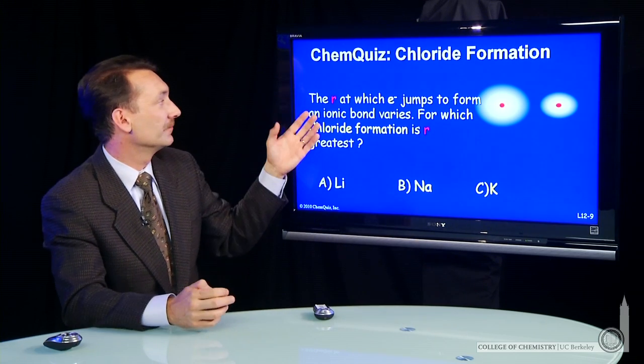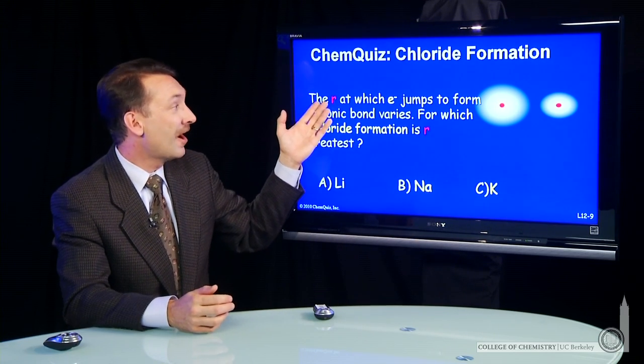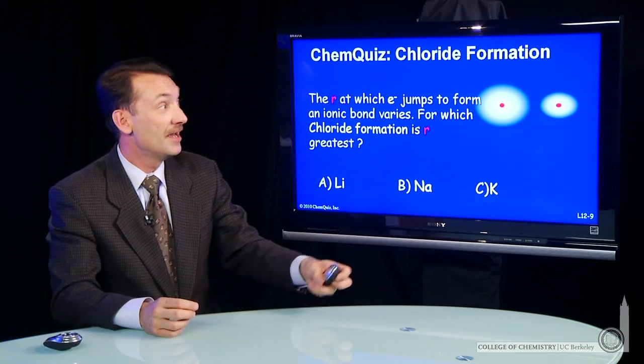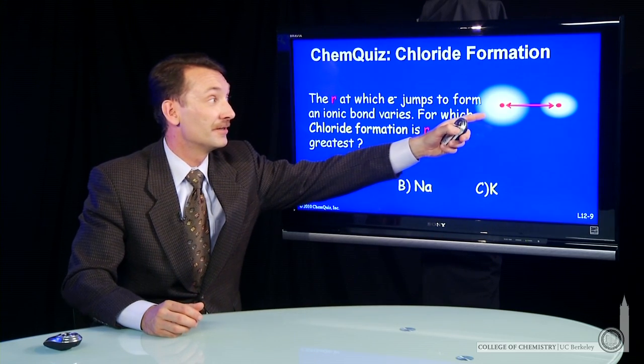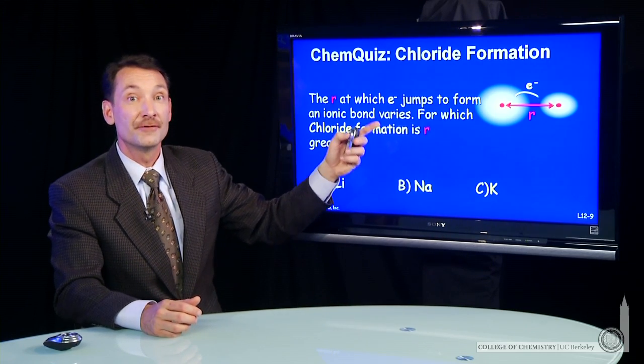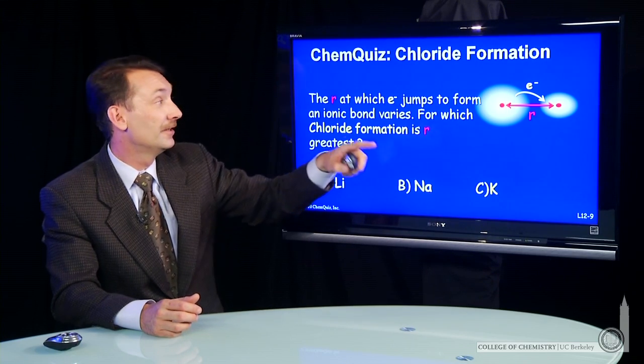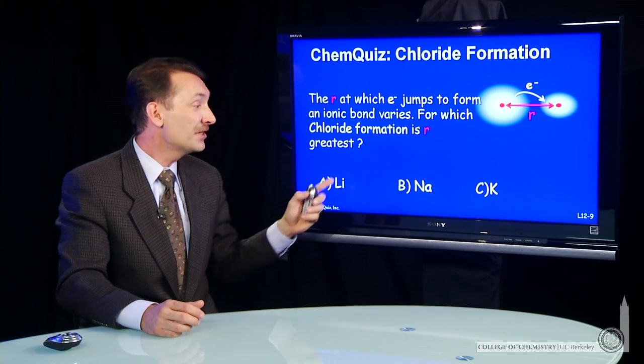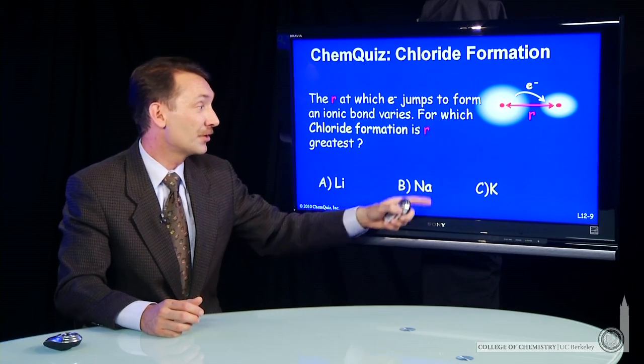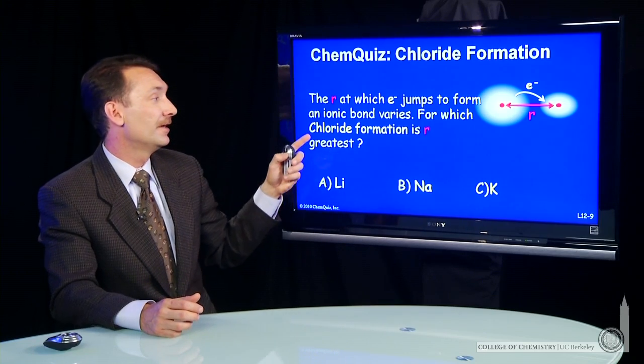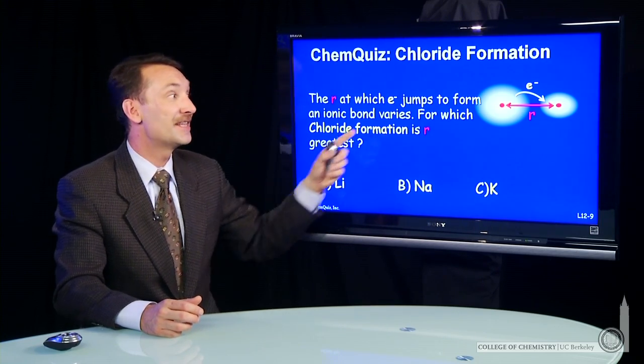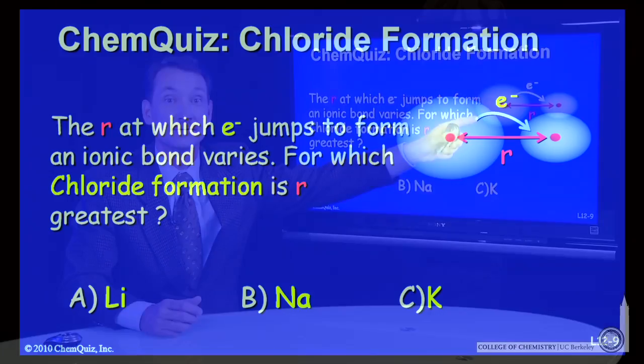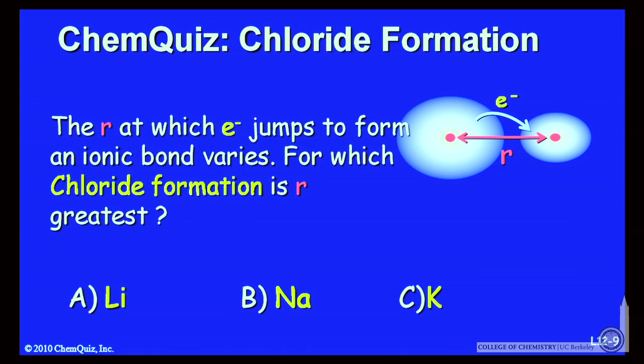So let me ask you this question. The r, the distance between nuclear centers, where an electron jumps from one element to the other, varies. For which of these elements, lithium, sodium, or potassium, in a chloride formation, is that distance the greatest? Think about that for a minute and make a selection.